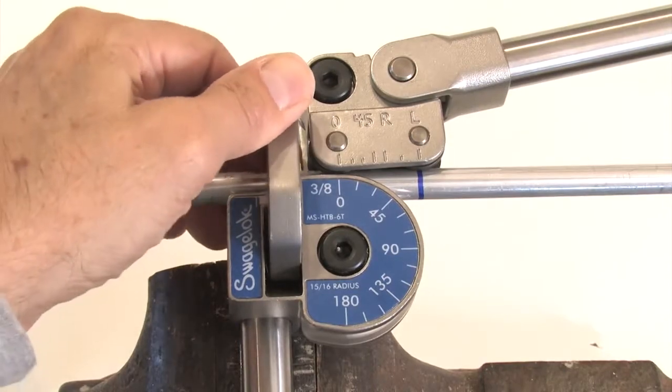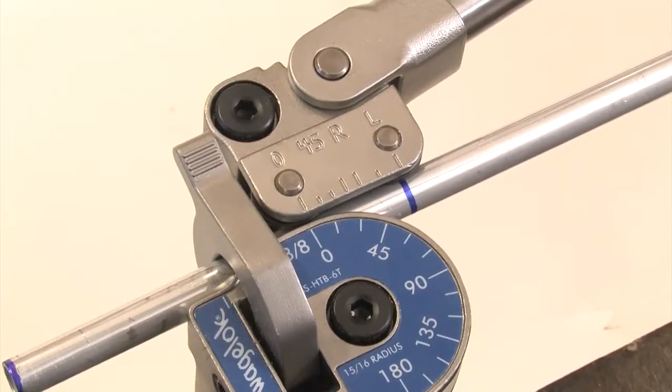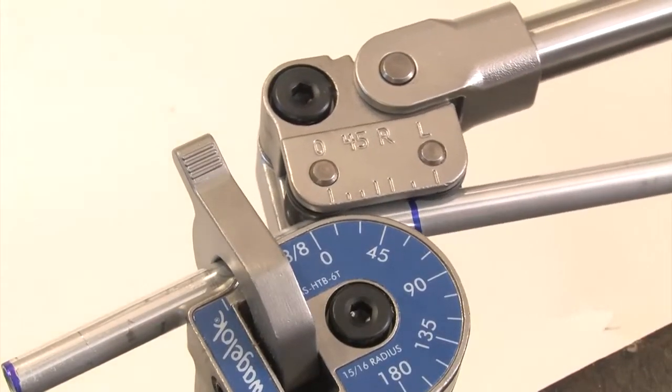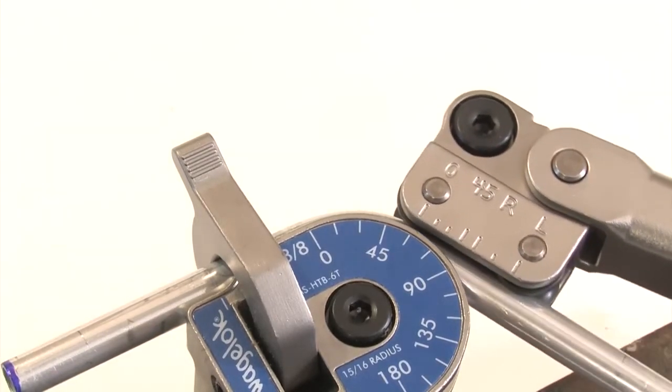Latch the tube firmly. Pull the short handle until the zero on the top scale lines up with the 90 on the degree scale.